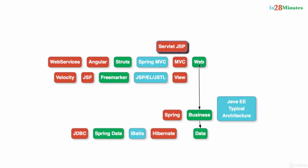If you want to show something on the UI or save some data from the user to the database, the web layer first calls the business layer. So the web layer is dependent on some class in the business layer. This is how we build web applications: the web layer is dependent on the business layer, and the business layer is dependent on the data layer.